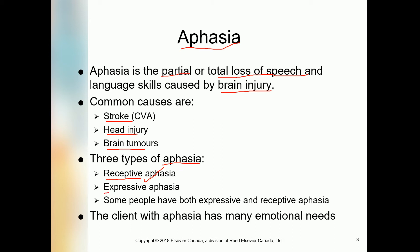The second type is expressive aphasia — this is a person's inability to express what they want. The third type is when some people have both expressive and receptive aphasia together. So the three types are: receptive aphasia, where people cannot understand what others speak; expressive aphasia, where the person's ability to verbalize and vocalize ideas in language form is dysfunctional; and the combined type.